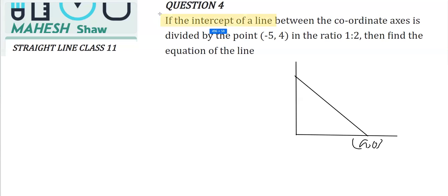In this question, it says the intercept of a line between the coordinate axes is divided by the point (-5, 4) in the ratio 1:2. Find the equation of this line.